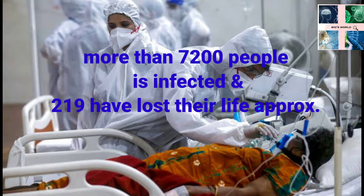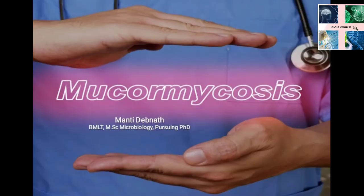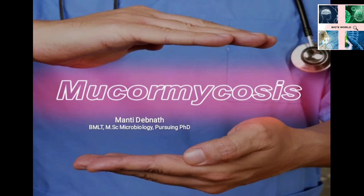The fungi responsible for this infection are found in different environmental niches like soil, digging, vegetables, breads and even dust. Some of the risk factors associated with mucormycosis include conditions like uncontrolled diabetes mellitus, bone marrow transplant, neutropenia, trauma, burn and hematogenic disorders. Studies related to mucormycosis have increased over the years due to the severity of this infection with a high rate of mortality.